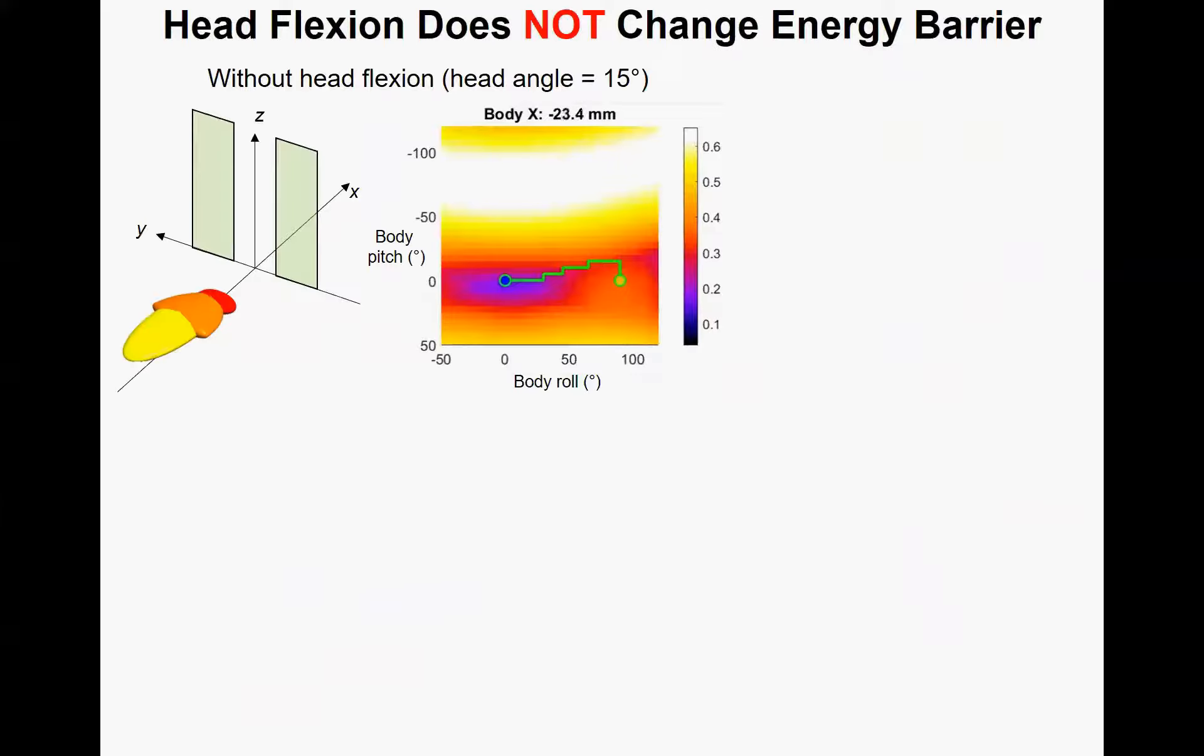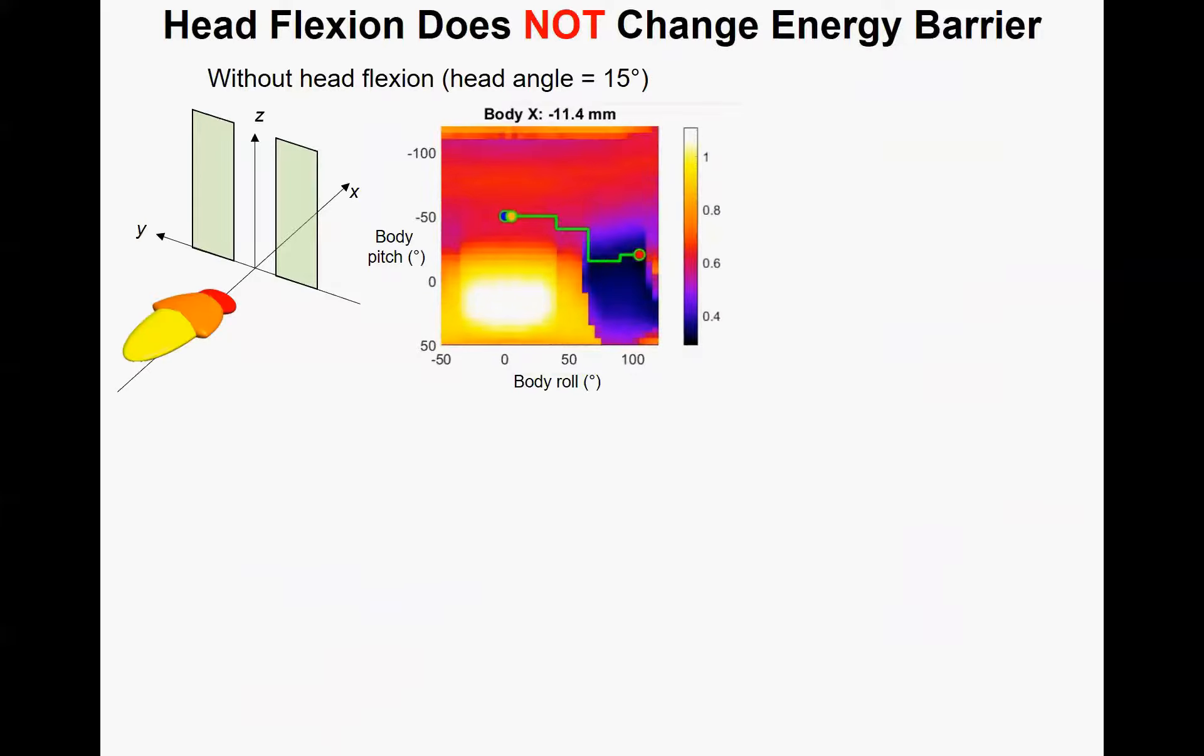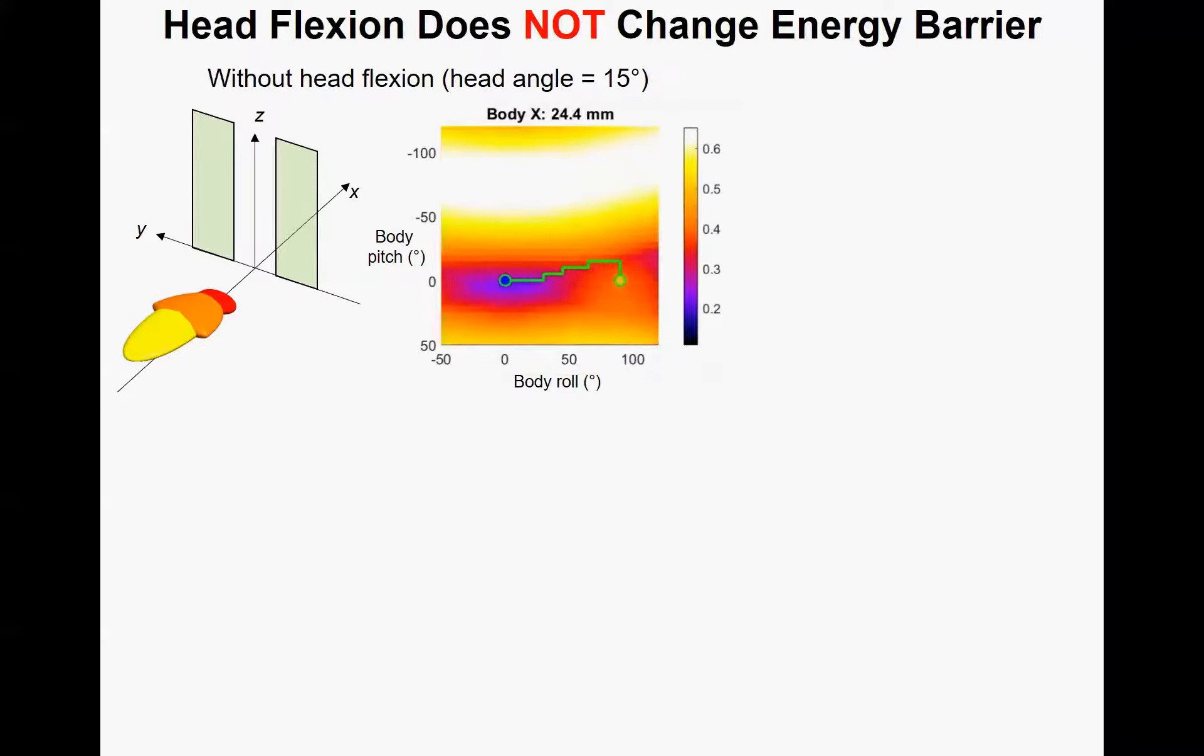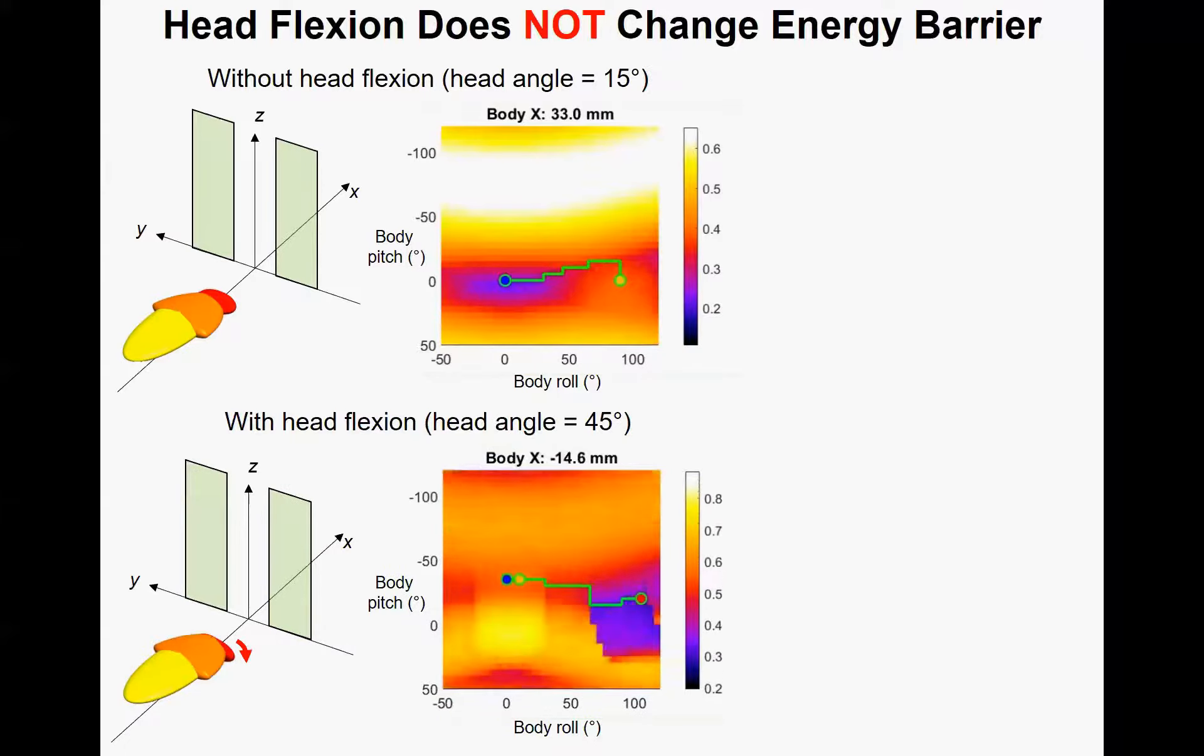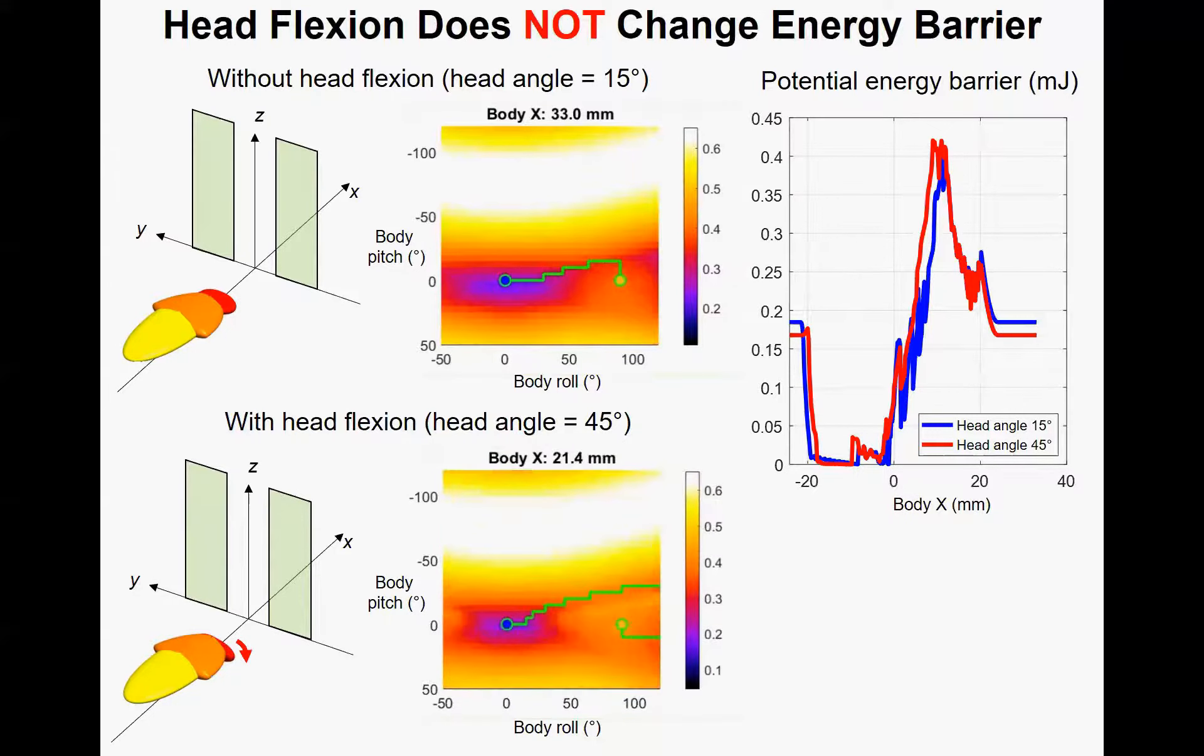Here we calculate the barrier between pitch and roll basin on the landscape using different head angles. First, we set the head angle to 15 degrees, which is the average head angle when the cockroach is running without obstacles. We generate the potential energy landscape, found the critical points, and found the energy barrier. Then we set the head angle to 45 degrees and did the same.